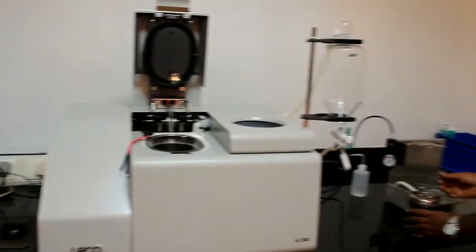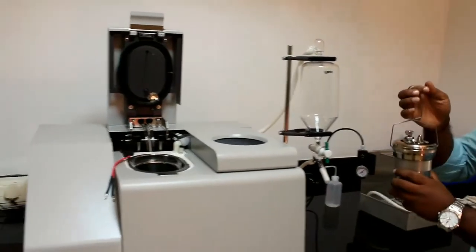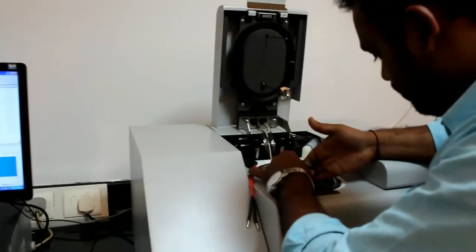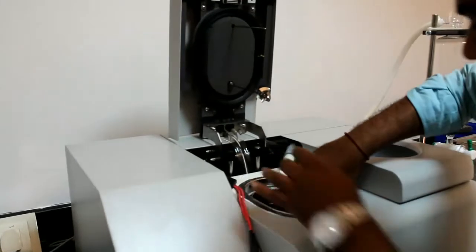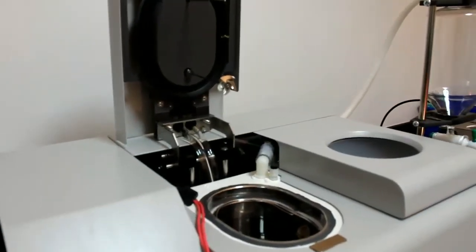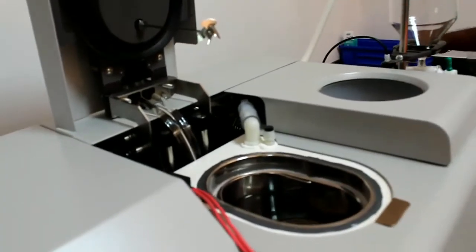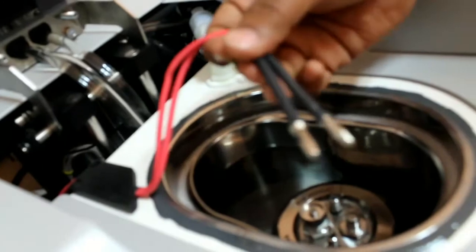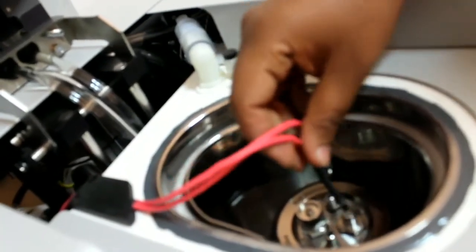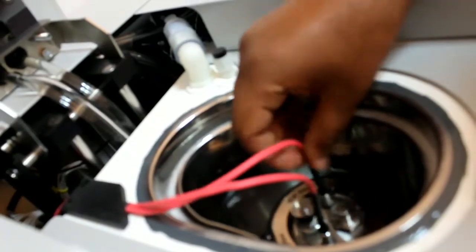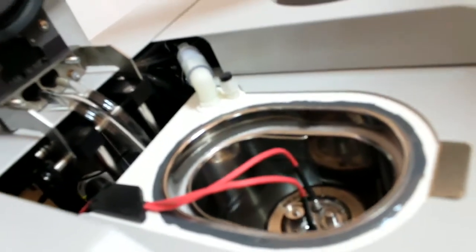Now we will pour the water and we will place the bucket into this jacket. Now we place the combustion vessel. We have a mark inside so that we can easily put our combustion vessel. We have two electrodes which can be connected either side, any other side. Now it is okay. We will close the lid.